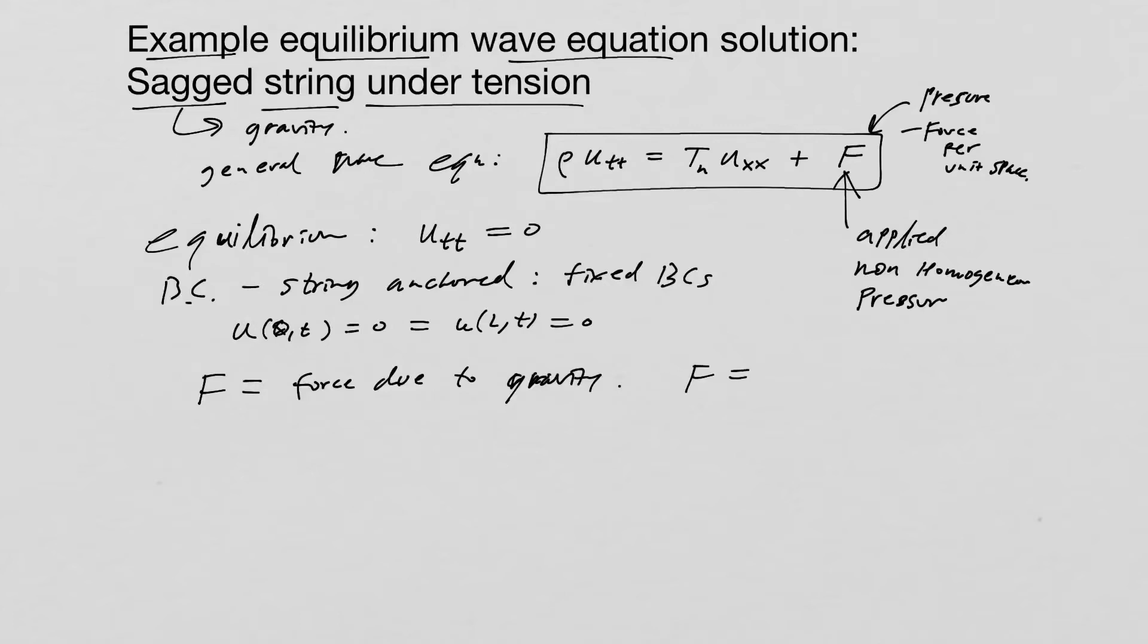In this case, that pressure is going to be F is equal to ρ, the mass density, times g. But because we want gravity to be pointing down, we're going to make it negative.